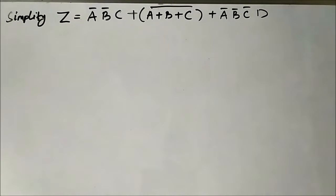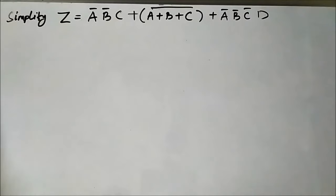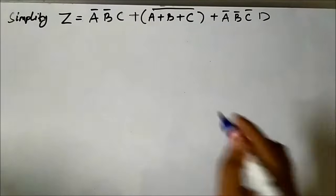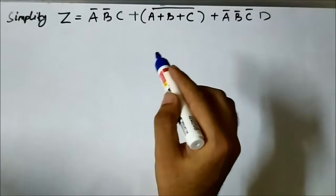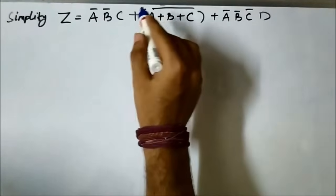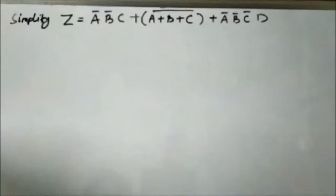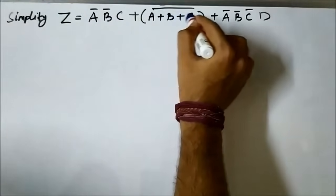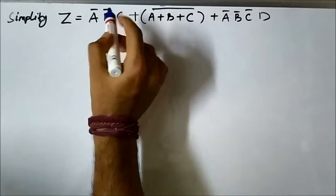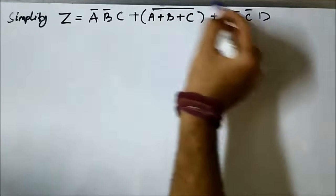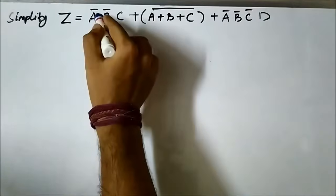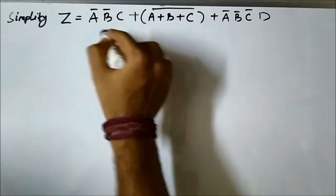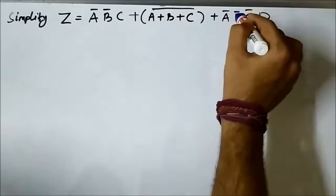Here we have another question on simplification of a Boolean expression. The expression is ā·b̄·c plus (a + b + c)̄ plus ā·b̄·c̄·d. The term (a + b + c)̄ is different from the other two terms — in those, all Boolean variables are ANDed together.